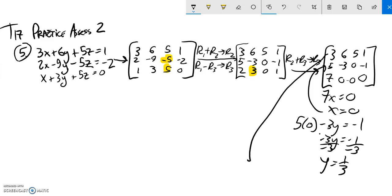Great. So then I'll plug those both into this one. See what I get. 3 times x, x is 0. Plus 6 times y, which is a third. Plus 5z equals 1. So that's a 0.